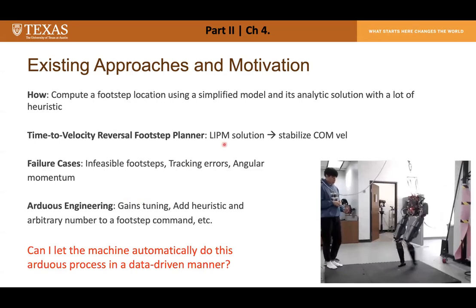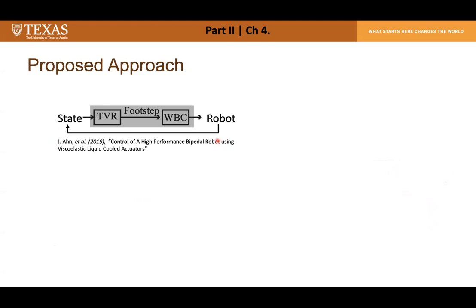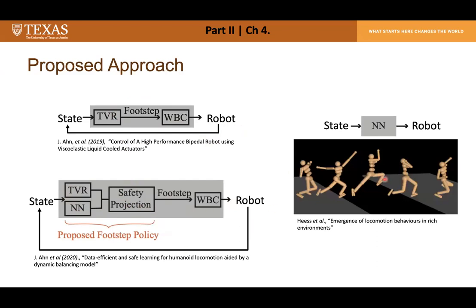This led to the idea: can the machine automatically do this arduous process using machine learning? The proposed approach preserves the structure of the TBR planner and whole-body controller, but adds a neural network policy in parallel to improve TBR in a data-driven manner, with a safety projection model. During training, the loop is closed with the whole-body controller and reward signals are read based on how well the robot walks. This framework differs from end-to-end learning because it leverages domain expertise and prior knowledge, enabling data-efficient and safe learning.